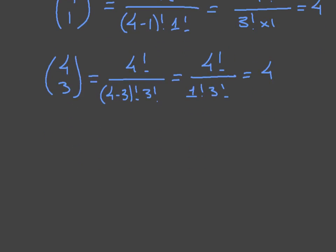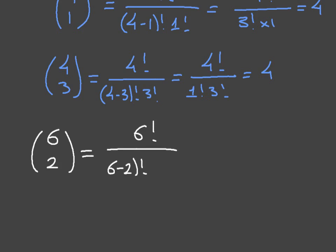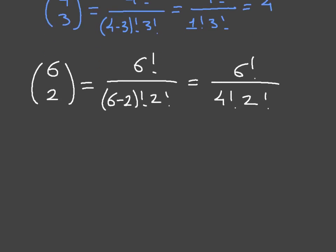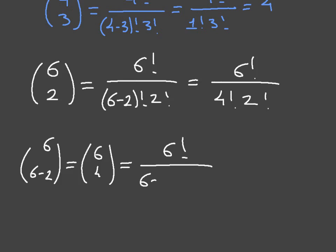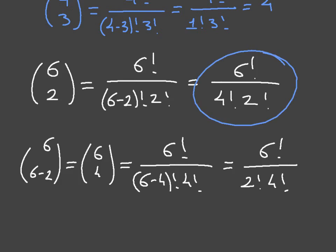Let's look at another example to confirm. Consider C(6, 2): that equals 6! over (6−2)! times 2!, which is 6! over 4! times 2!. By the rule, this should equal C(6, 6−2) = C(6, 4), which equals 6! over (6−4)! times 4!, giving 6! over 2! times 4!. We can see right away these are equal, confirming the symmetry.